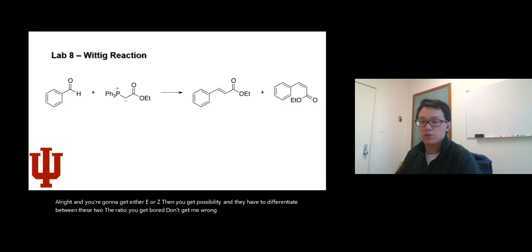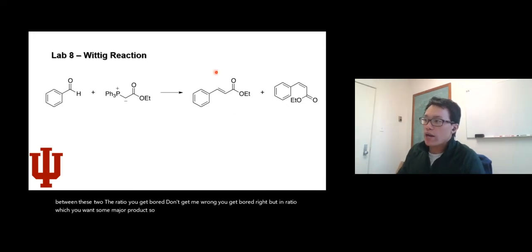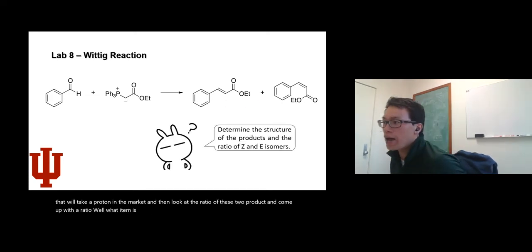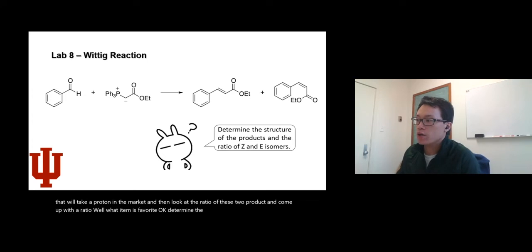They have to differentiate between these two, the ratio. You get both, don't get me wrong, you get both, but in what ratio, which one's the major product? So once they get the product, which is a mixture, they will take a proton NMR and then look at the ratio of these two products and come up with a ratio. What isomer is favored? They determine the structure of the product and the ratio of Z and E isomer using a proton NMR.